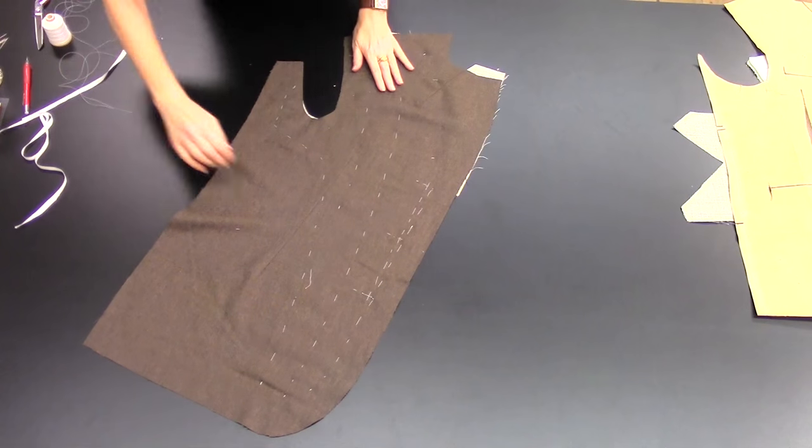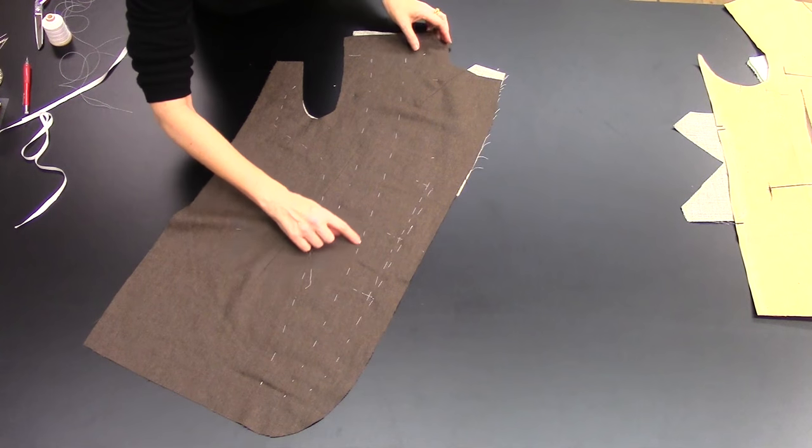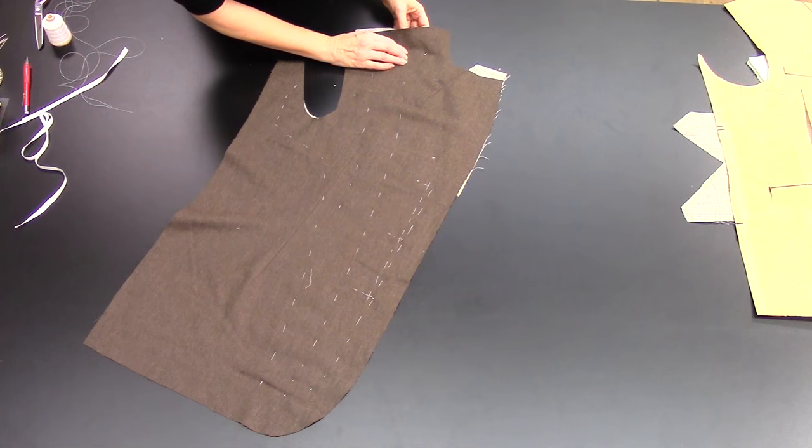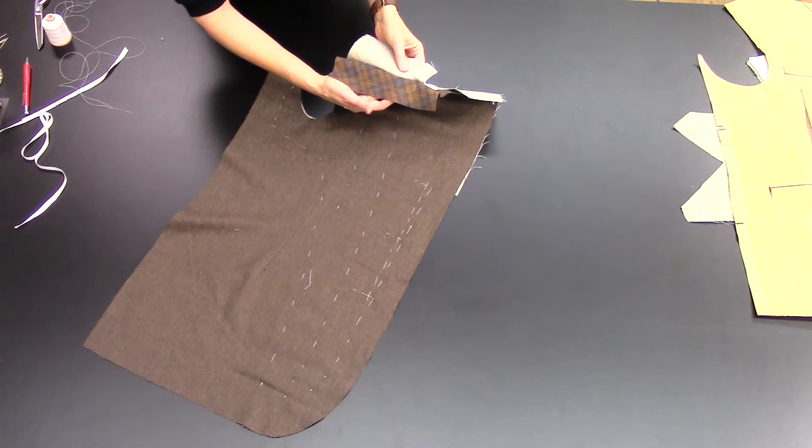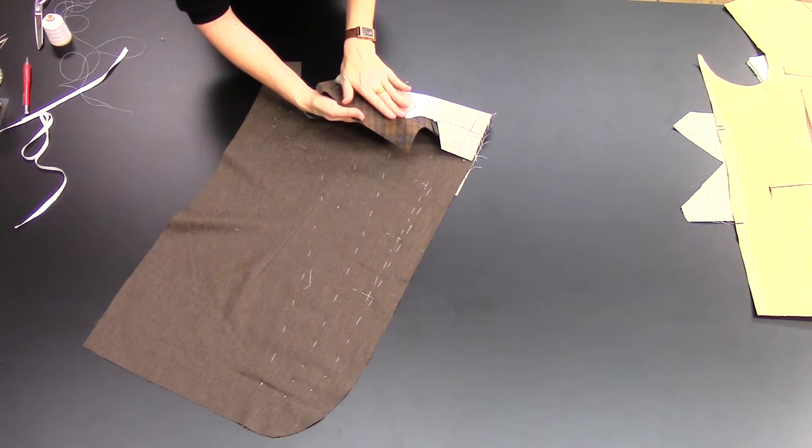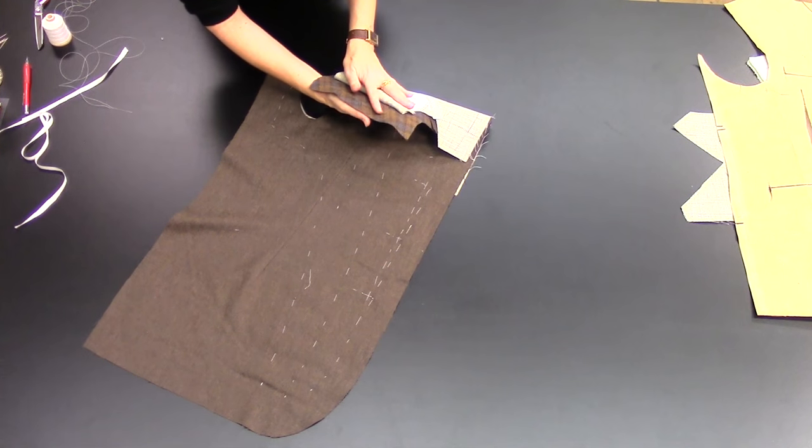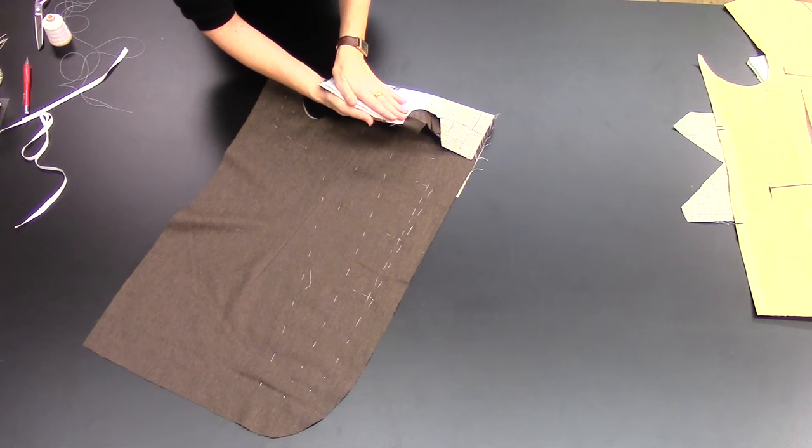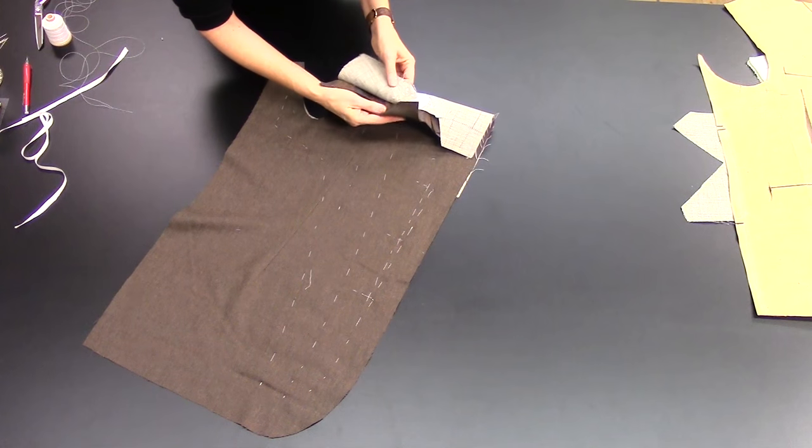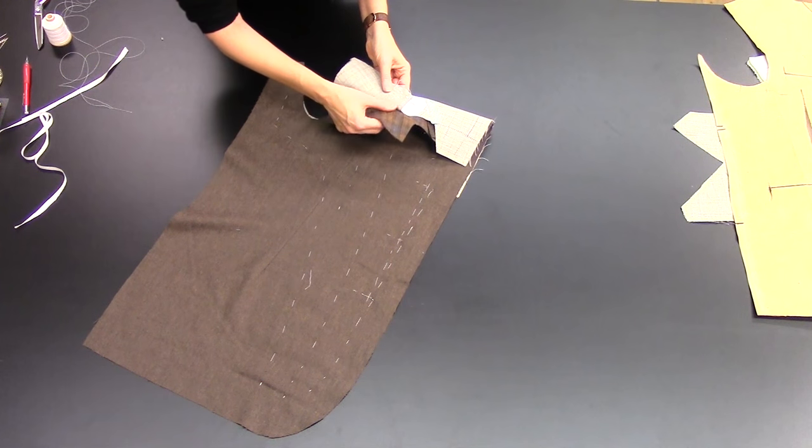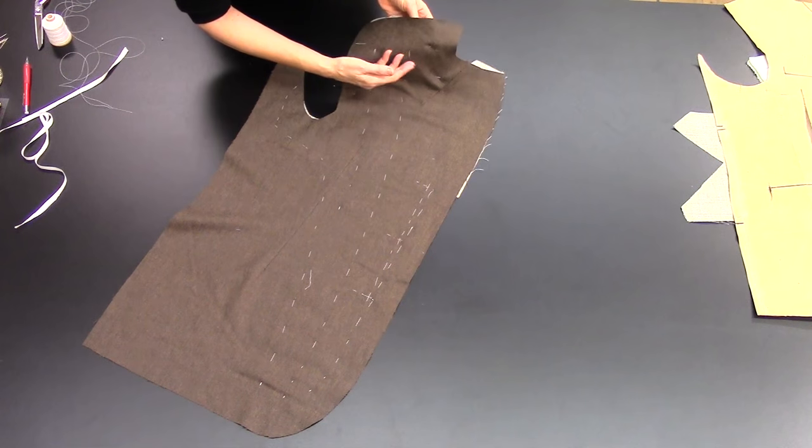You're going to want to baste up the front, down up the center, and you'll want to start and stop a couple inches from the shoulder seam. That's because in a later step, we'll want to fold the canvas out of the way, stitch the shoulder seam, and then lay the canvas over that. So why go all the way to the edge when in a later step you'll need to get in there?